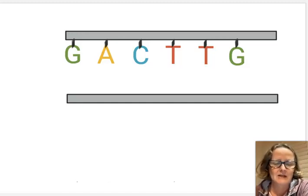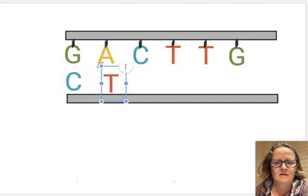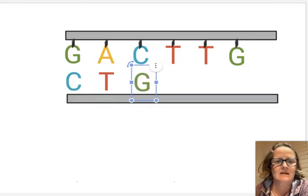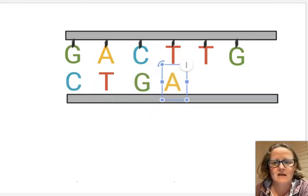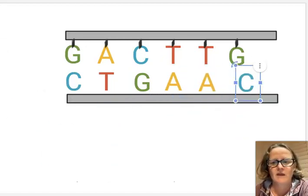We have to use the base pair rules. Every time you have a G on one strand, you have a C on the other. Every time you have an A, you find a T on the other side. For a C, you get a G base, and for a T, you get an A base. So using base pairing rules, you can build the opposite strand of DNA and match up the base pairs.